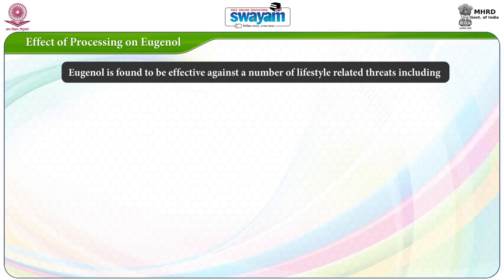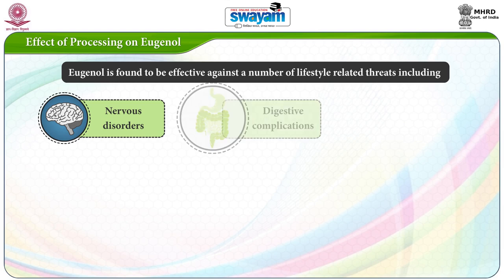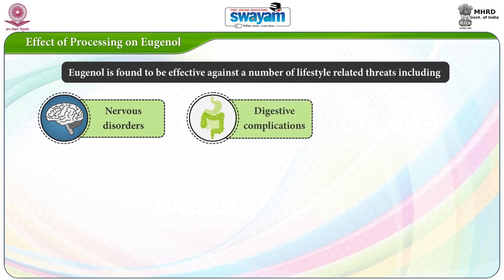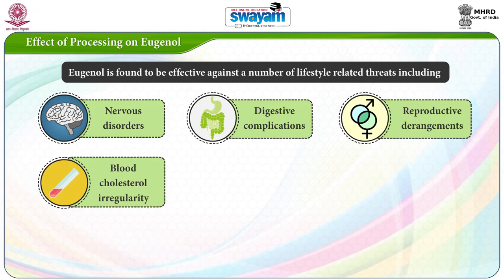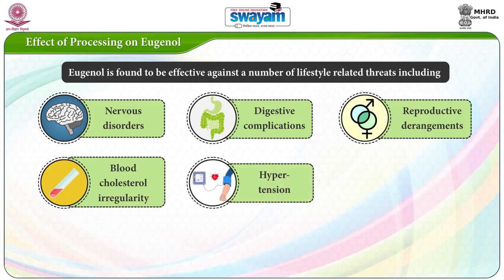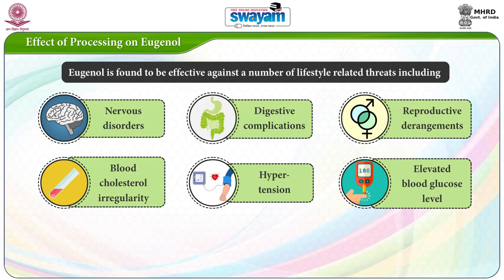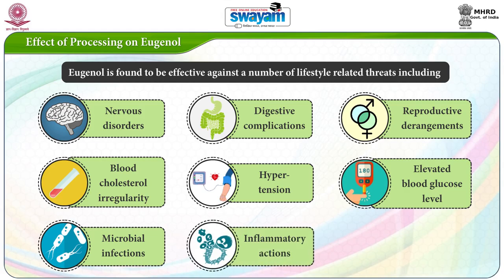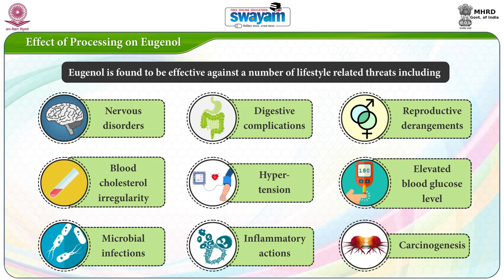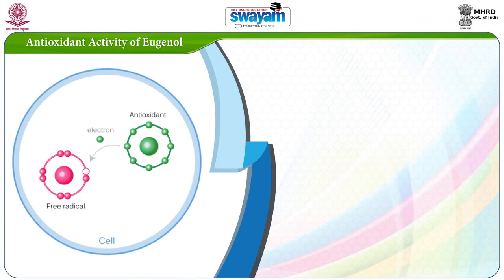Eugenol is found to be effective against a number of lifestyle-related threats including nervous disorders, digestive complications, reproductive derangements, blood cholesterol irregularity, hypertension, elevated blood glucose levels, microbial infections, inflammatory actions, and carcinogenesis. Now first is antioxidant activity of eugenol.